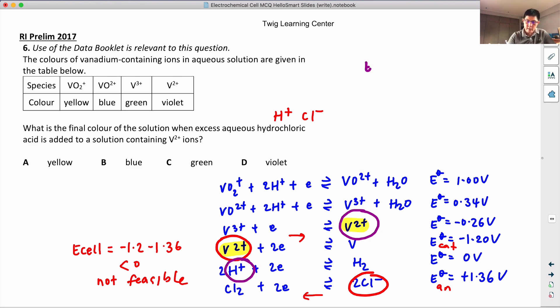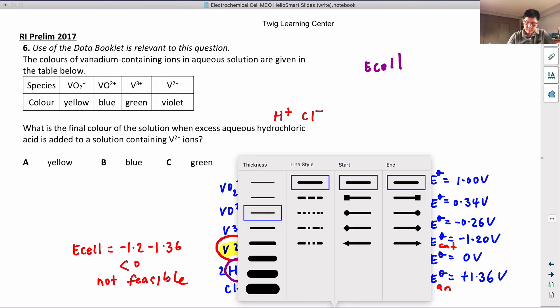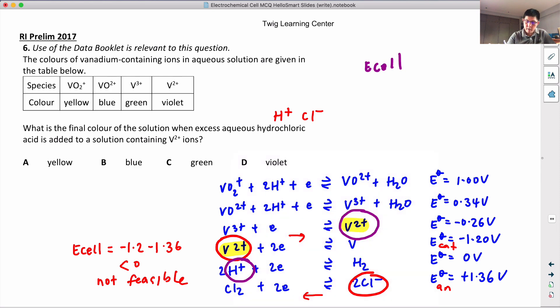So what's my E-cell? Let's calculate the E-cell. E-cell equals E cathode minus E anode, right? So this case will be, this reduction and this oxidation, 0 minus -0.26. This is definitely positive, greater than 0, reaction is feasible.